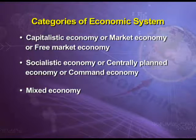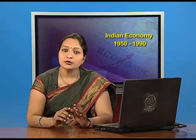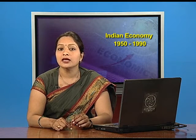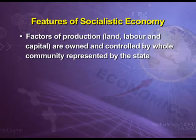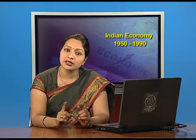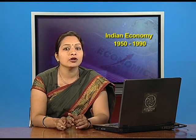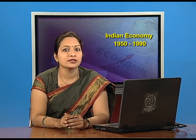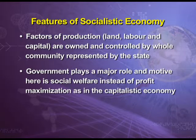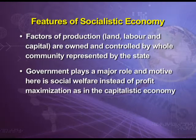Now we move to the socialistic economy. Socialistic economy has features entirely different from the capitalistic economy. Here, factors of production — land, labor, and capital — are owned and controlled by the whole community represented by the state, whereas in the capitalistic economy these factors were owned and controlled by private individuals. In a socialistic economy, the government plays a major role and is the kingpin.